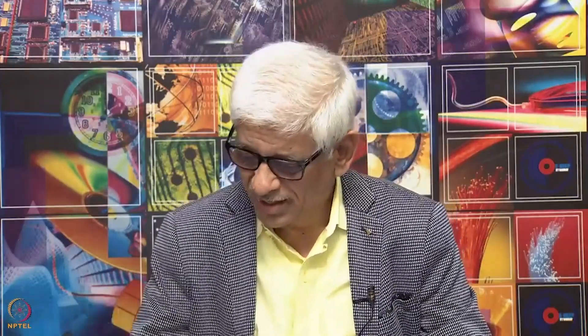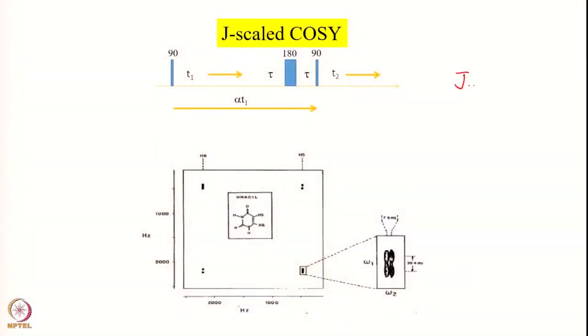Along the F1 dimension, J is scaled up. The idea is to scale up J along the F1 dimension. I will show you the spectrum first — look at the spectrum of a simple two-spin system. This is uracil, a two-spin system which has two protons H5 and H6.